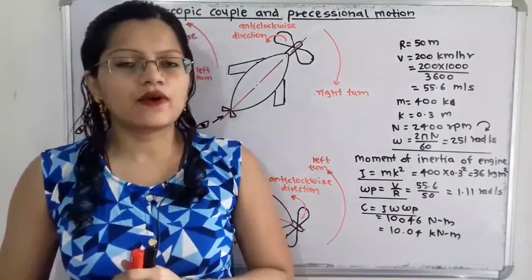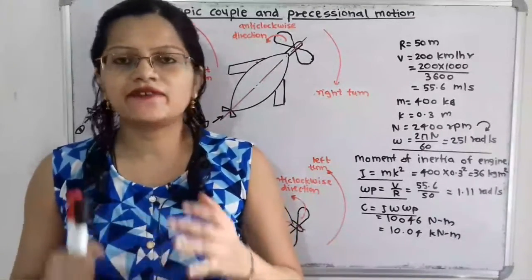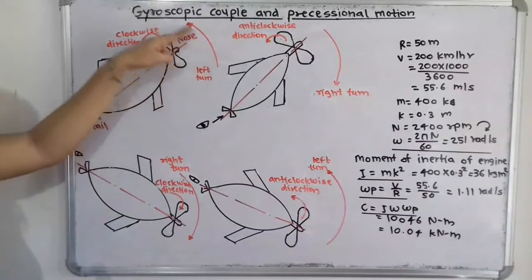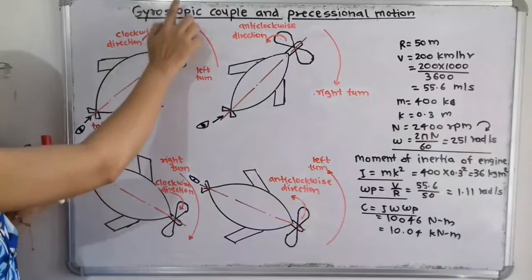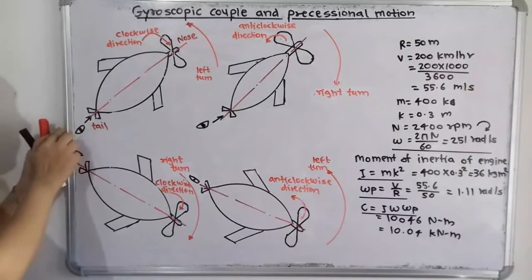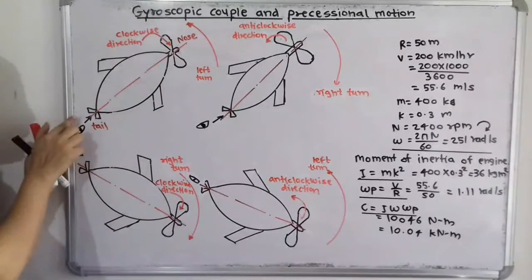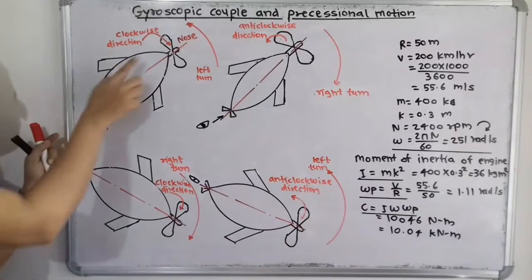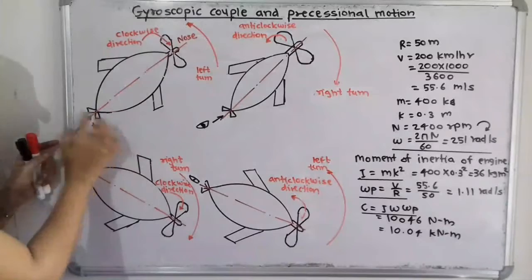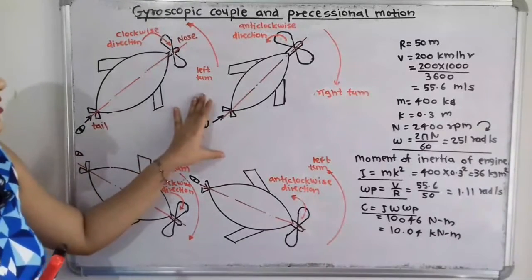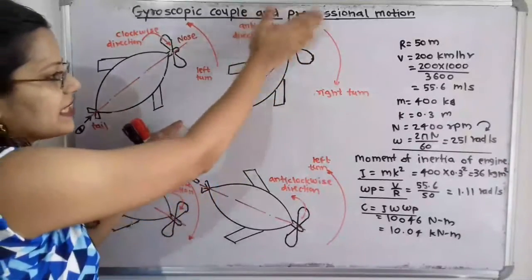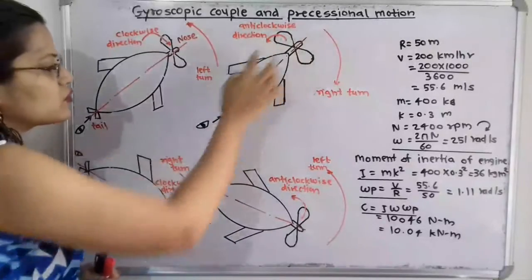Now we will understand the exact position for the nose and tail at different conditions. When the propeller is rotating in clockwise direction and the aeroplane is taking a left turn, there is a raise in nose and dip in tail. In the second condition, when the propeller is rotating in anticlockwise direction and the aeroplane is taking a right turn, there is also a raise in nose and dip in tail.